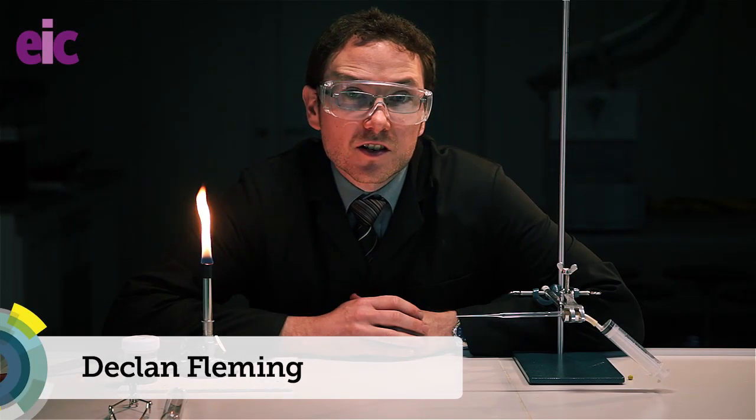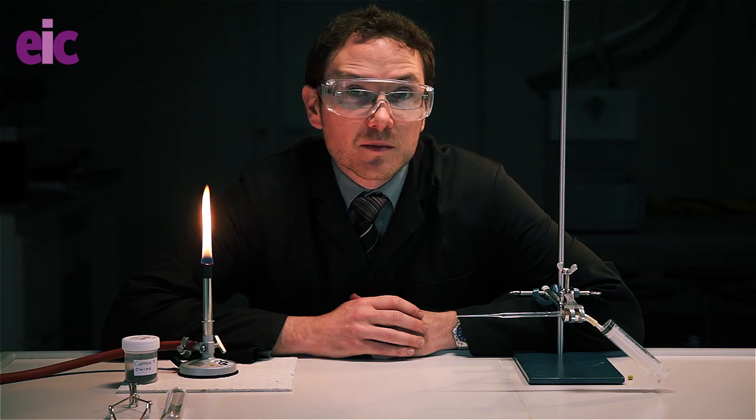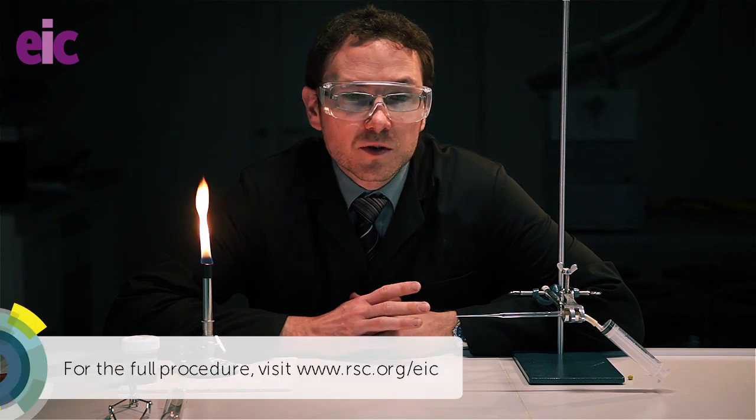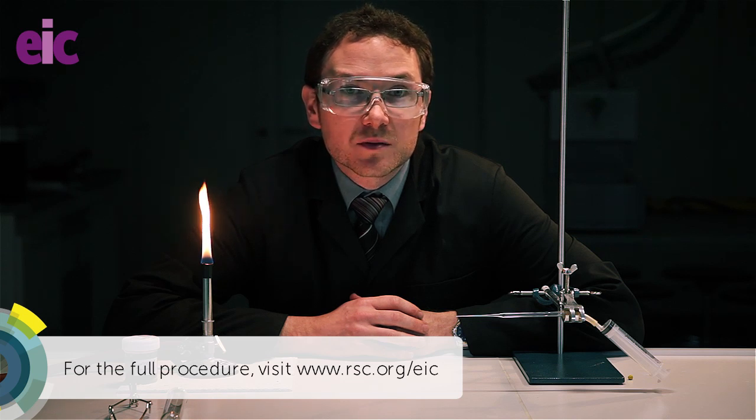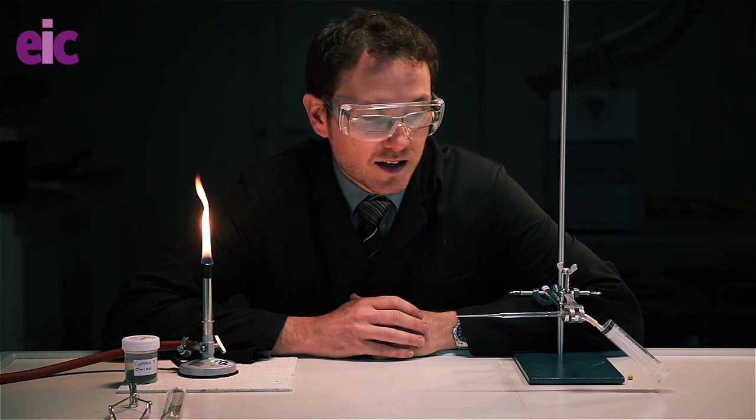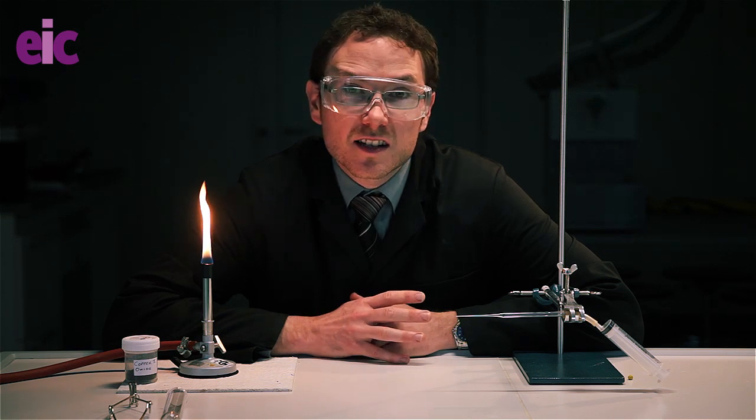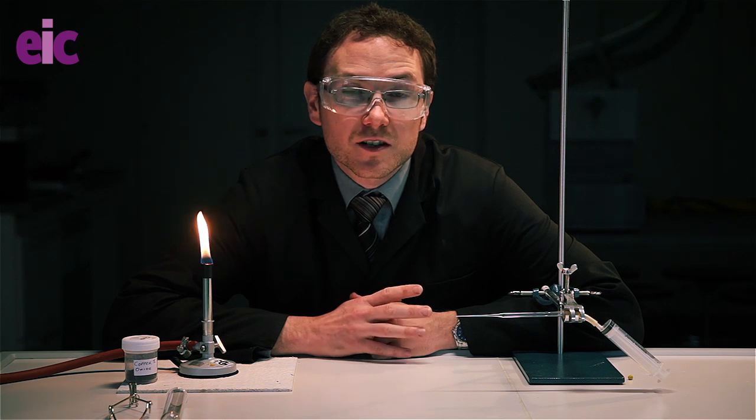So this month we're going to be having a look at the reduction of copper oxide. This is a practical that a lot of students will do with carbon. One of the problems with that is you've got all this black carbon powder making it difficult for them to see the product. If you do it with hydrogen instead, you also have the advantage of being able to see the oxidation product, the water.